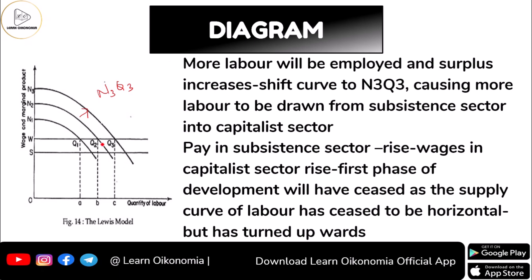These things happen in the first phase of development, but this process will stop when the labor supply curve ceases to be horizontal. From that point onwards, the supply of labor turns upward, meaning this mechanism stops functioning.